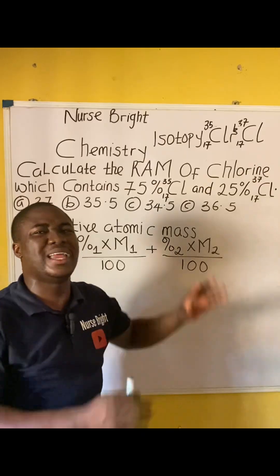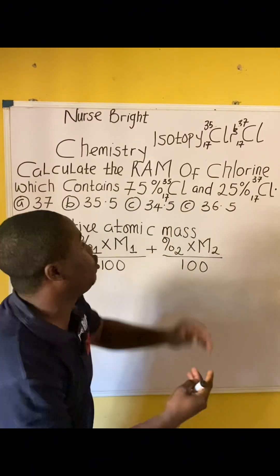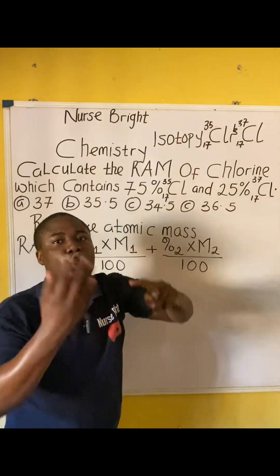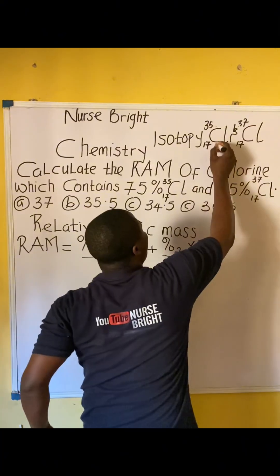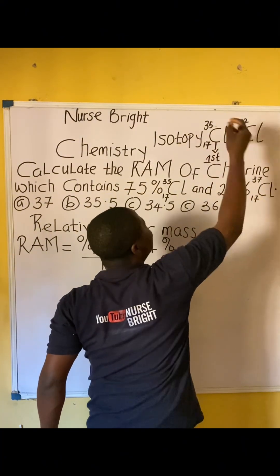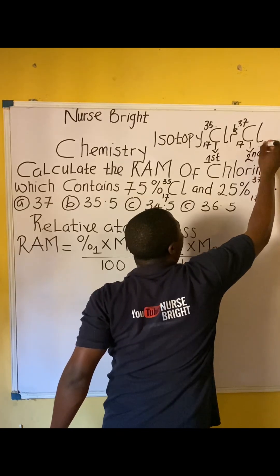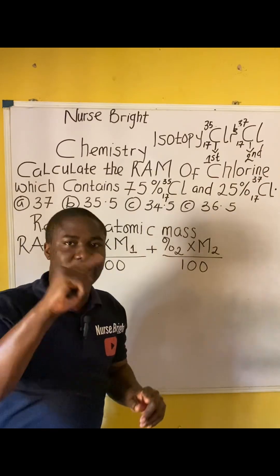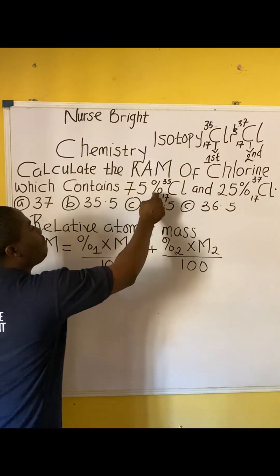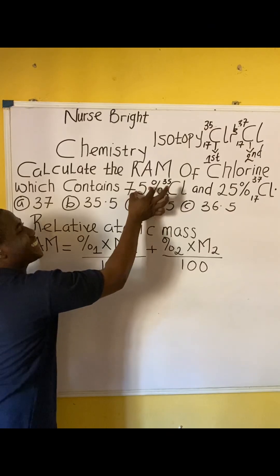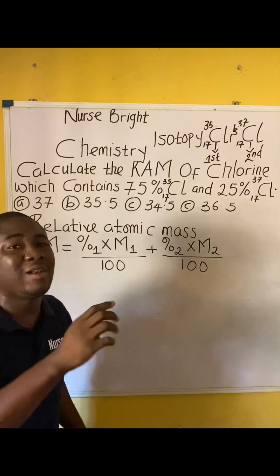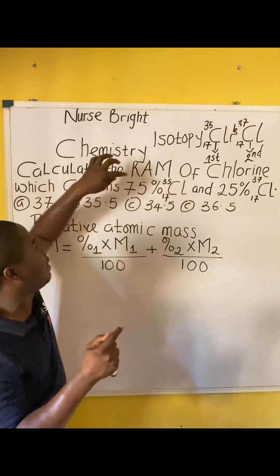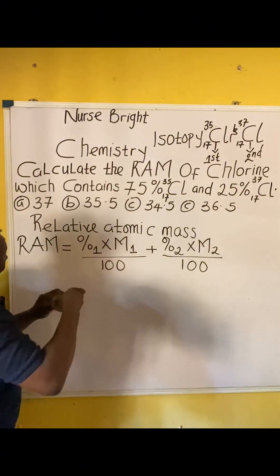To determine which is the first and second isotope: when you count numbers you count 35 before 37, so chlorine-35 is the first isotope and chlorine-37 is the second isotope. Therefore, 75% will be percentage one, because they said 75% of Cl-35-17, and 25% will be percentage two.